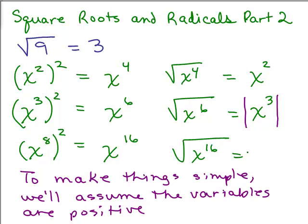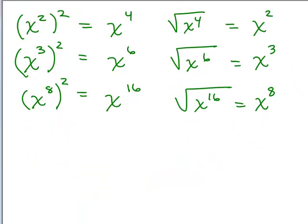For the square root of x to the sixteenth, a common mistake is to write x to the fourth, but that's not correct — it was x to the eighth that was squared to get x to the sixteenth, so the answer is x to the eighth. That would be positive no matter what, because something to the eighth power is always positive. No absolute value sign is necessary if x is positive.